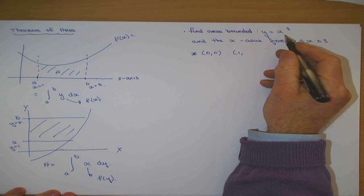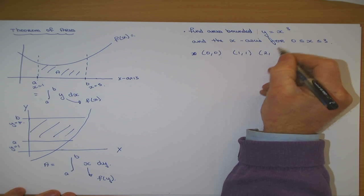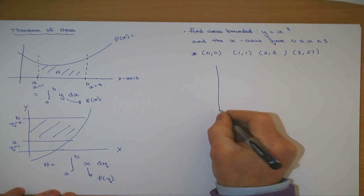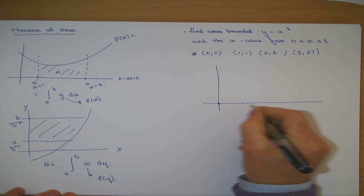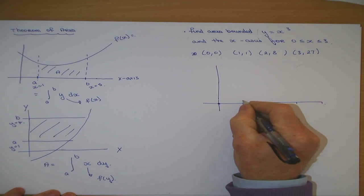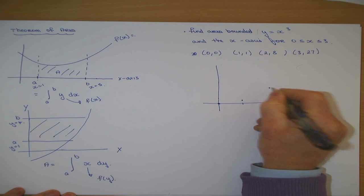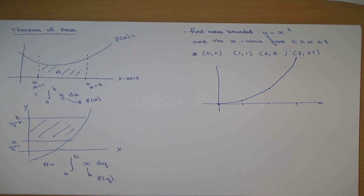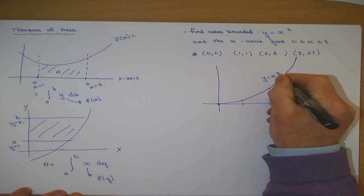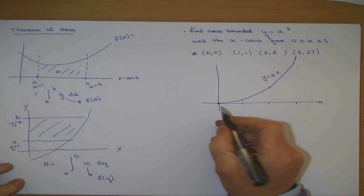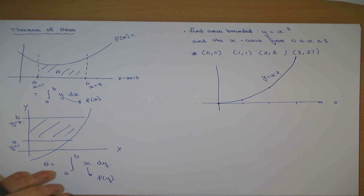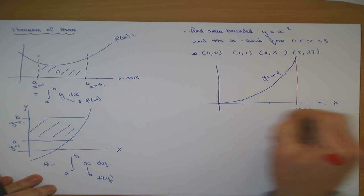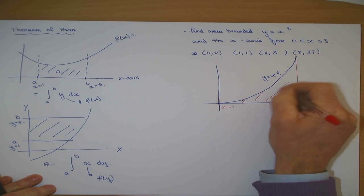When x is 0, y is 0. When x is 1, y is 1. When x is 2, y is 8. And when x is 3, y is 27. So you have the coordinates: (0,0), (1,1), (2,8), (3,27). It's a curve that looks something like that — that's y equals x cubed. I have to get the area between the curve and the x-axis from x equals 0 up as far as x equals 3, and I'm trying to calculate that area.